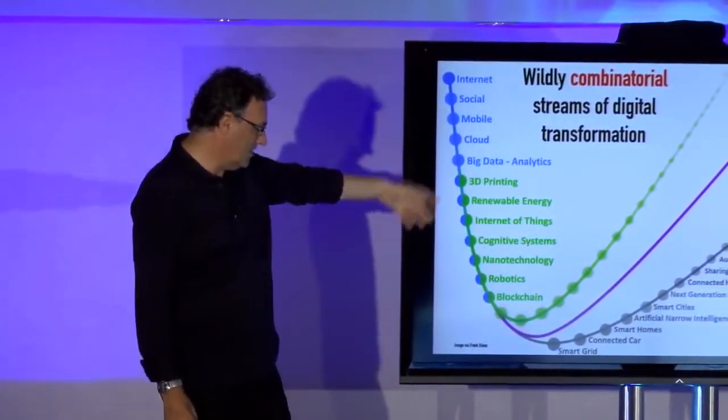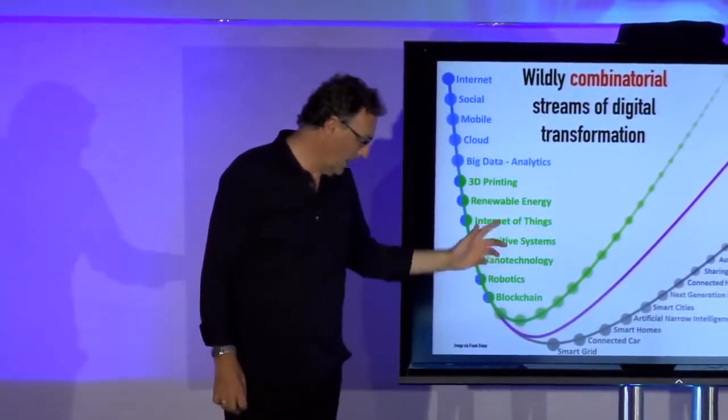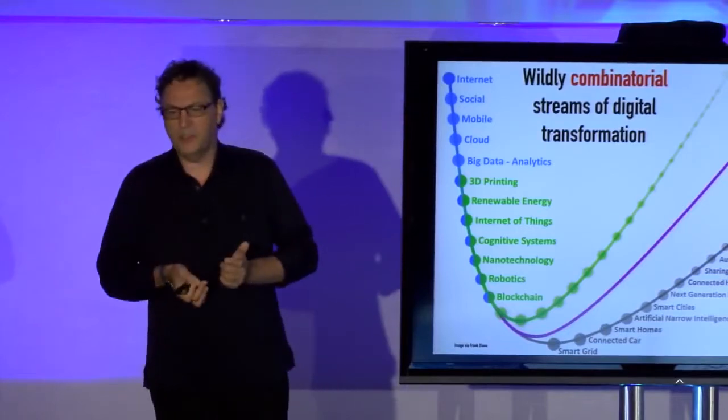The Internet of Things, cognitive systems, nanotechnology, robotics, the blockchain, digital money, they all happen on top of each other.